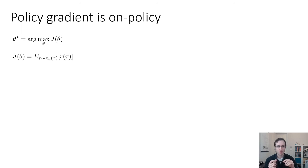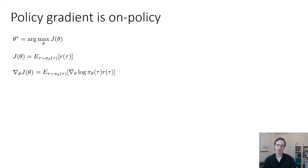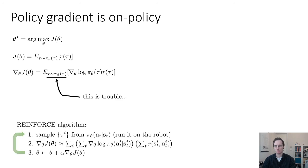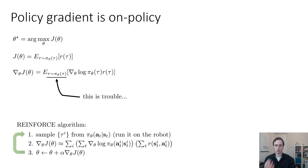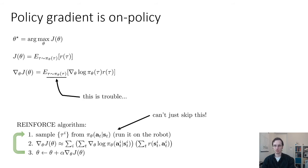One important consideration: policy gradient is an on-policy reinforcement learning algorithm. This means you must collect additional samples by actually running your policy in the real world every time you modify the policy parameters. Your gradient is an expected value under π_θ(τ), so every time you compute the gradient, you need samples from π_θ. At every step you have to generate new samples and throw out your old ones — unlike mini-batch SGD where you can keep sampling from the same dataset. You always discard all old data and collect new data. If you skip that sampling step, it will not work.